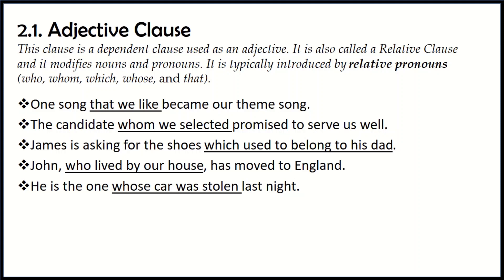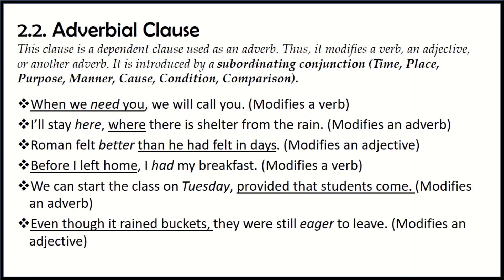The second dependent clause is the adverbial clause. An adverbial clause functions as an adverb, which means it modifies or describes a verb, an adjective, or another adverb. You have to introduce this adverbial clause by using a subordinating conjunction. Subordinating conjunctions tell you about time, place, purpose, manner, cause, condition, and comparison. If you want to know more about subordinating conjunctions, you can refer to my lecture on conjunctions on my YouTube channel.